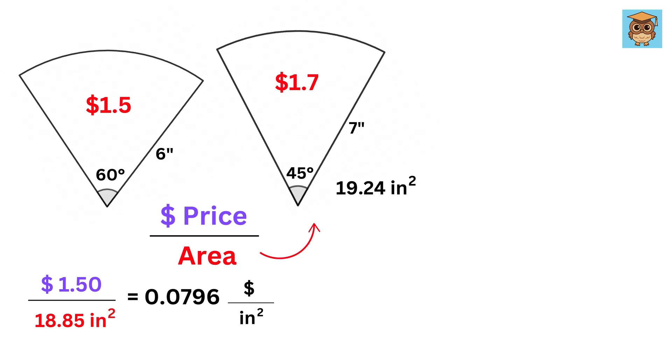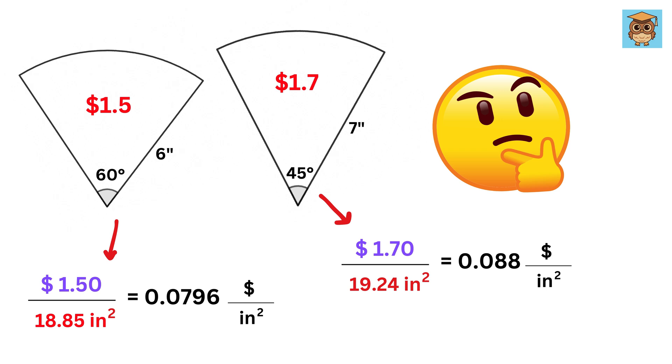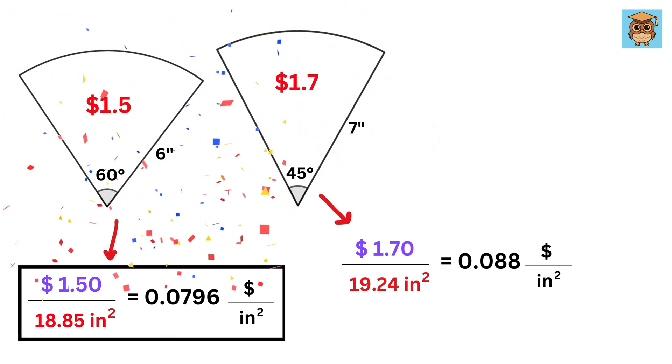Then for this slice, it will be $1.70 divided by 19.24 or $0.088 per in². So which one is a better deal? Of course, the first one, and that's it.